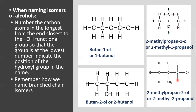In this branched case, the compound is 2-methylpropan-1-ol. Note there is an error on the slide — the names need to be swapped. In the other branched isomer, the OH is on the second carbon — the lowest possible number — and the branch is also on the second carbon, making it 2-methylpropan-2-ol.